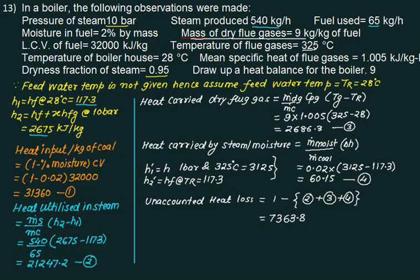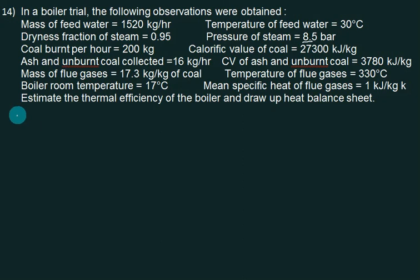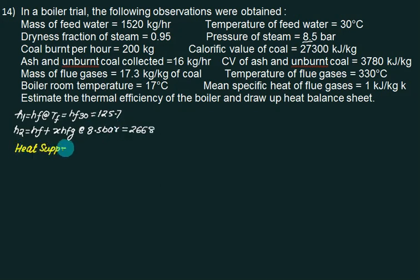Now Problem 14. In a boiler trial, the following observations were obtained: mass of feed water equals 1520 kg/hr, temperature of feed water equals 30°C, dryness fraction of steam equals 0.95, pressure of steam equals 8.5 bar, coal burnt per hour equals 200 kg, calorific value of coal equals 27,300 kJ/kg, ash and unburnt coal collected equals 16 kg/hr, CV of ash and unburnt coal equals 3780 kJ/kg, mass of flue gases equals 17.3 kg/kg of coal, temperature of flue gases equals 330°C, boiler room temperature equals 17°C, mean specific heat of flue gases equals 1 kJ/kg K. Estimate the thermal efficiency of the boiler and draw up heat balance sheet. Write first h1 equals hf at room temperature, which is 125.7. What is h2? hf plus x·hfg at pressure 8.5 bar with dryness 0.95, which equals 2668. Heat supply equals 1 minus... moisture is not present but ash is present, so this is percentage of ash multiplied by calorific value of coal.